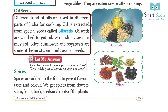Different kinds of oils are used in different parts of India for cooking. Oil is extracted from special seeds called oil seeds. Oil seeds are crushed to get oil. Groundnut, sesame, mustard, olive, sunflower, and soybean are some of the most commonly used oil seeds.